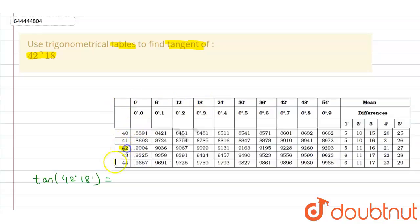So here we have 42 degree and we have to find out 18 minutes. Here we have 18 minutes. That means the value of 42 degree and 18 minutes is 0.9099. So the value is 0.9099.